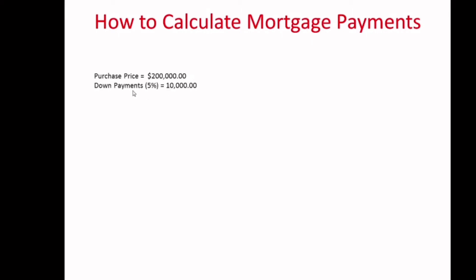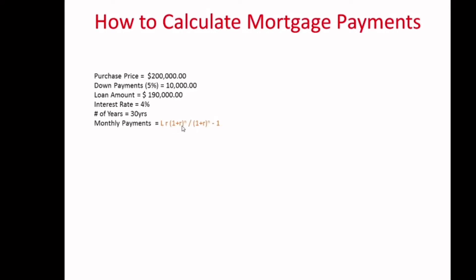So the purchase price was $200,000, the down payment is 5% which is $10,000, the loan amount you're borrowing is $190,000, the interest rate is 4%, and we're using a 30-year term which is 360 months — 12 months per year times 30 years. The loan amount is $190,000. The interest rate 4% is over the full year, so you divide by 12: 0.04 divided by 12 gives you the interest rate per month.